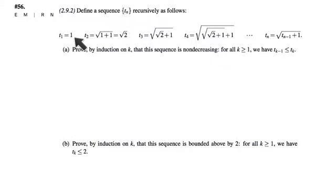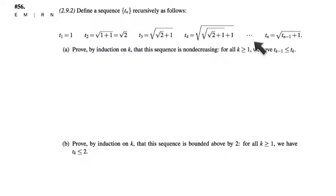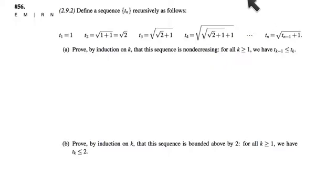So if we start with one, then the next term is the square root of one plus one. The next term is the square root of one plus that, and so on. That's what this recurrence formula is telling us — how to make each term out of the previous term.